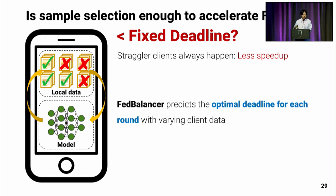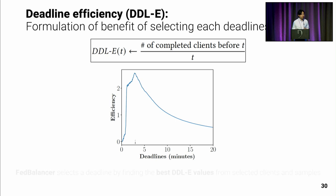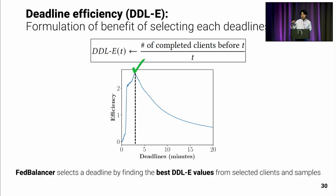FedBalancer predicts the optimal deadline for each round with varying client data. To achieve this, we propose a metric called deadline efficiency (DDLE), which is formulated as the number of completed clients before time T divided by T, where T is the candidate deadline. From our preliminary study, we found there always exists a certain deadline that achieves the peak DDLE value. Based on that, FedBalancer selects the deadline by finding the best DDLE value from selected clients and samples.